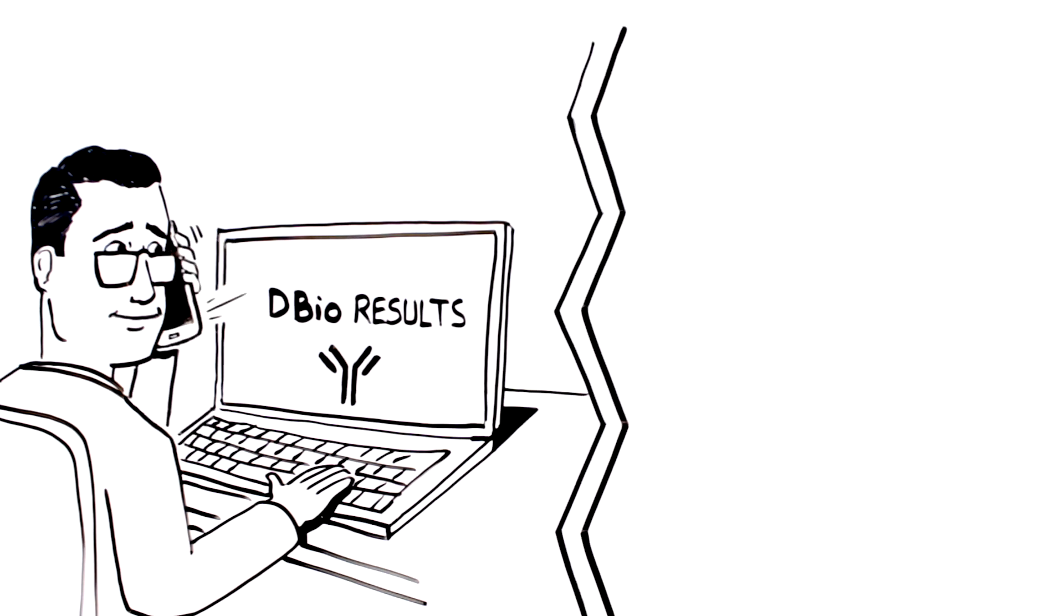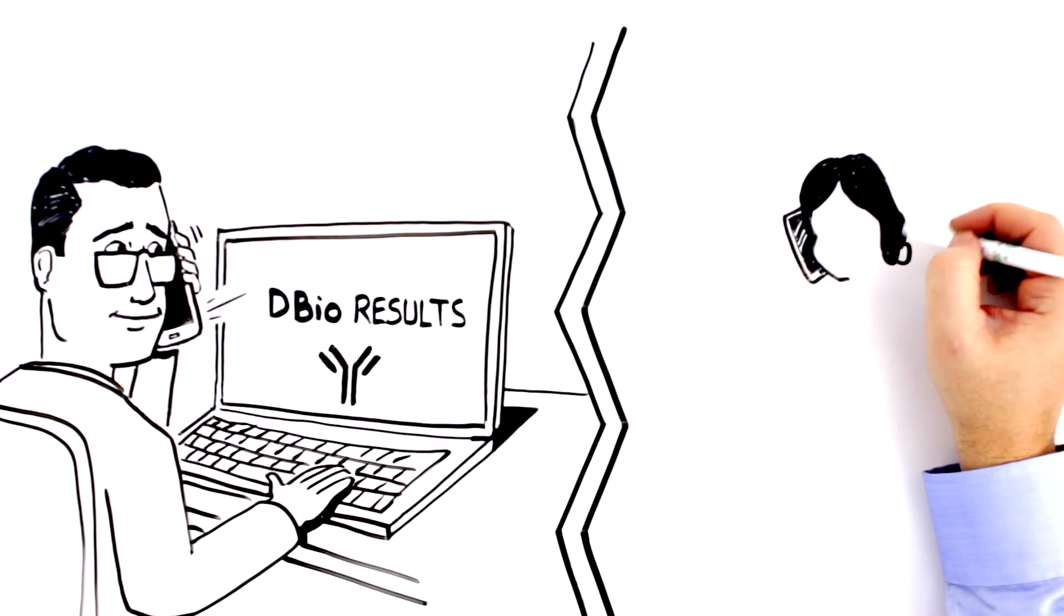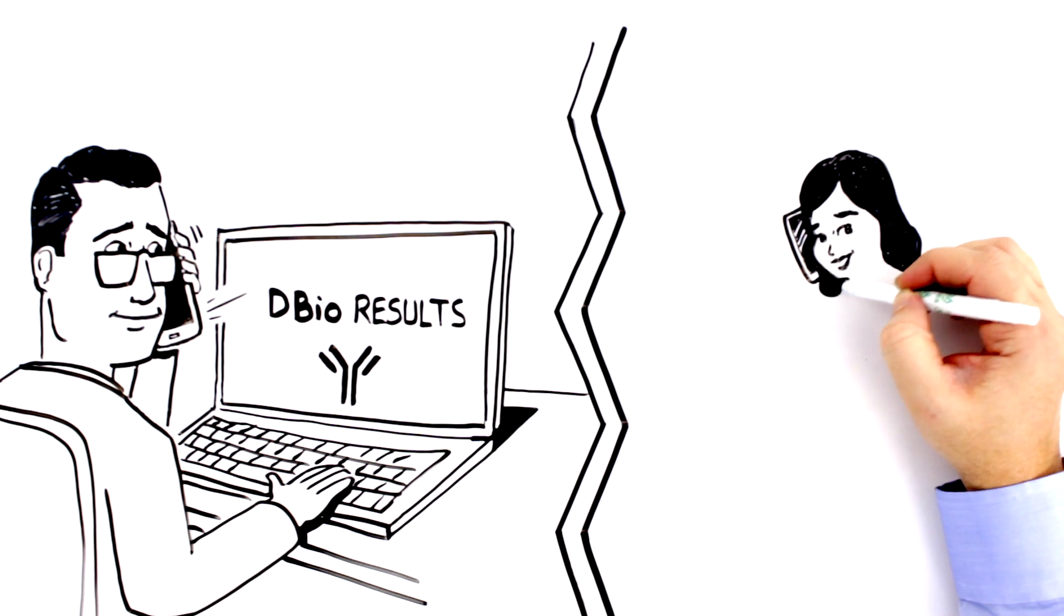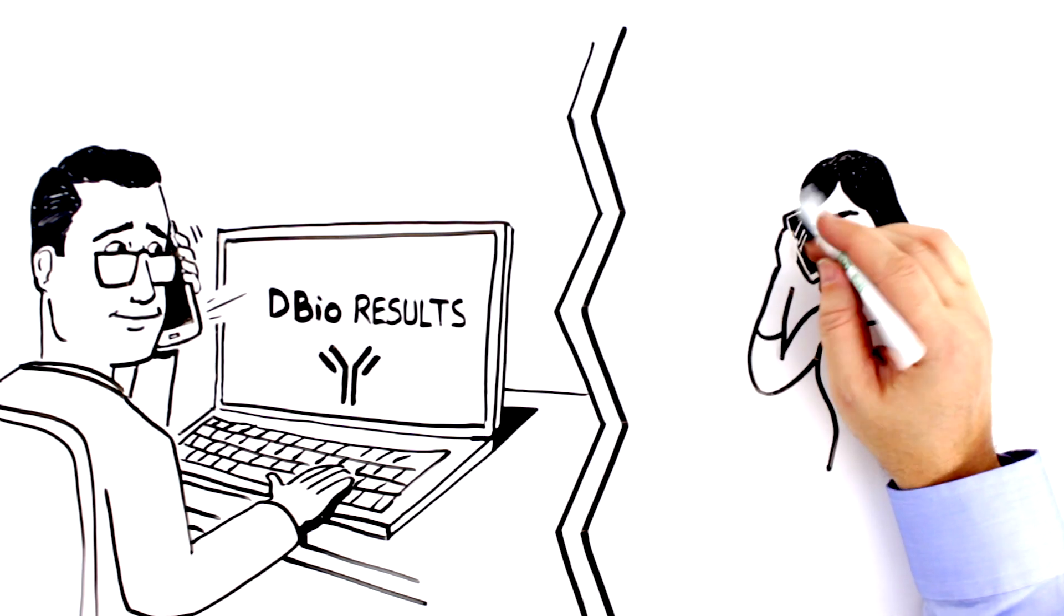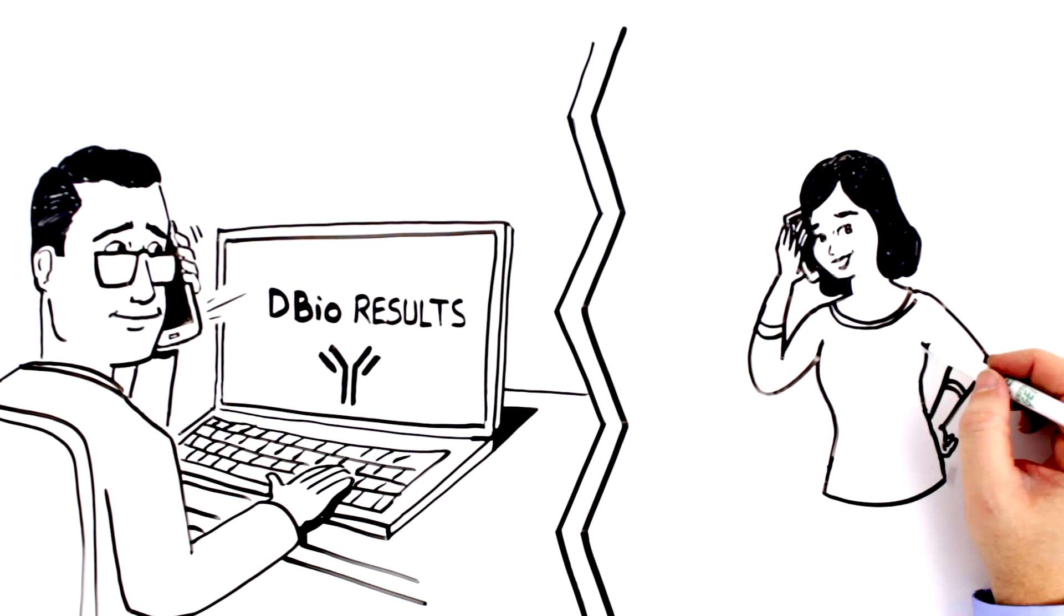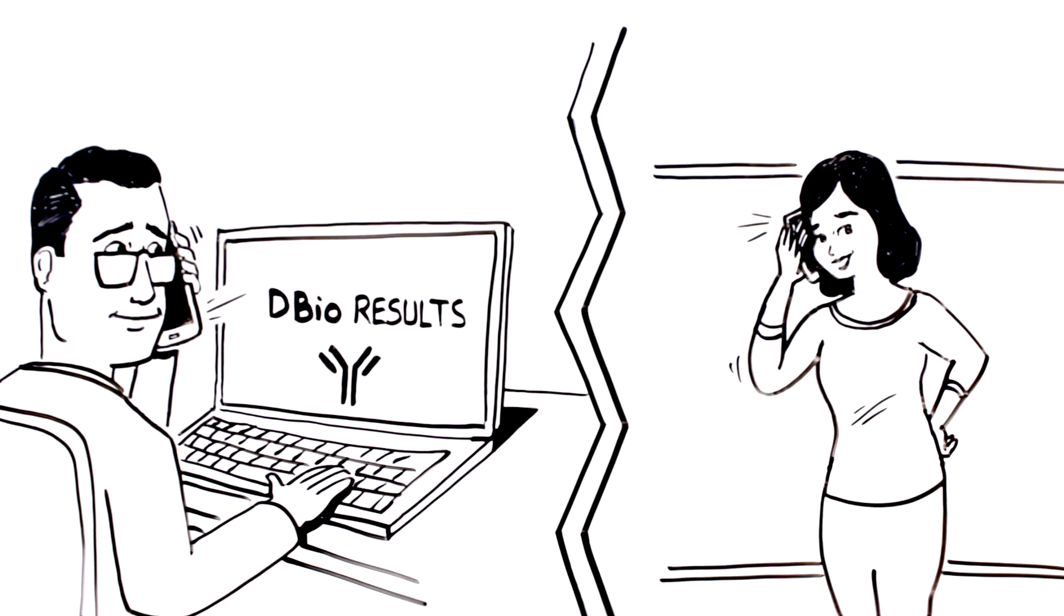Mo is thrilled and calls Sophia to thank her. She explains that the success of D-Bio's library is attributed both to its diversity and to the principles of developability that are applied to enrich the library.